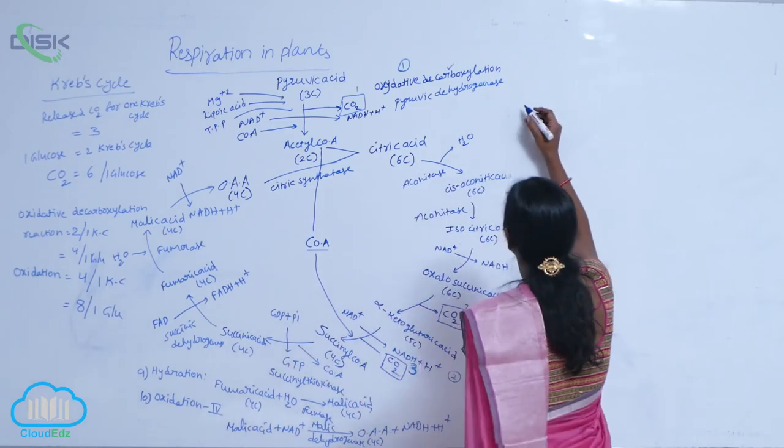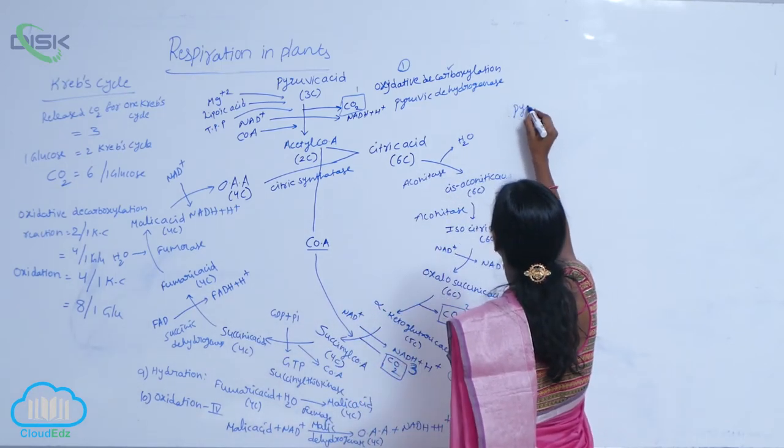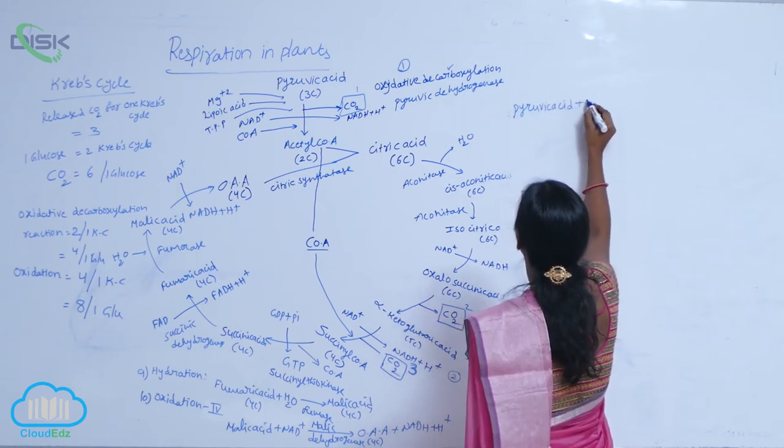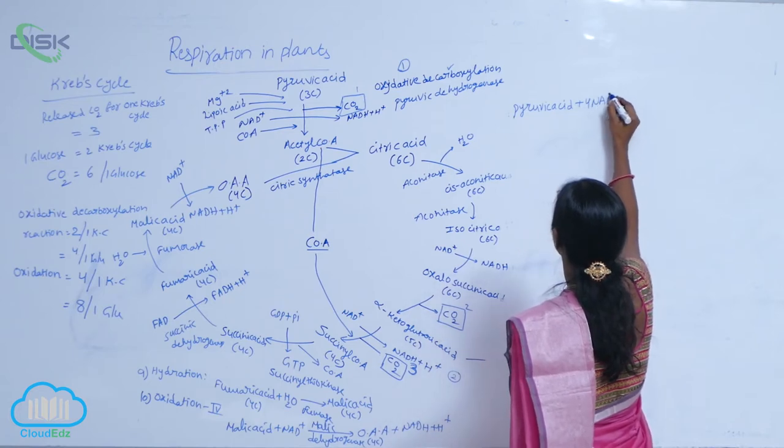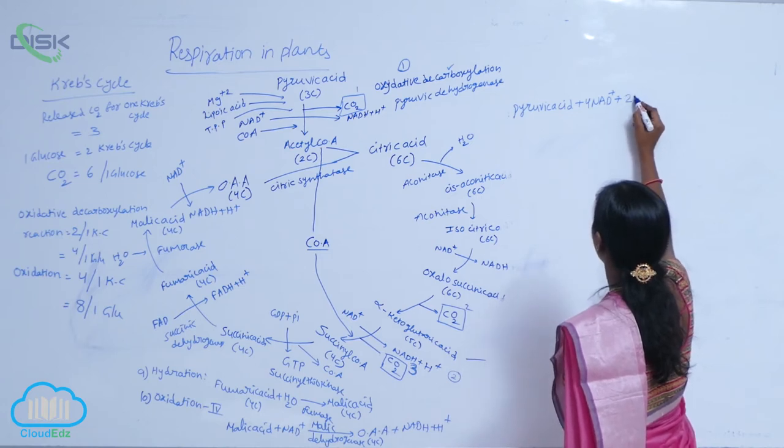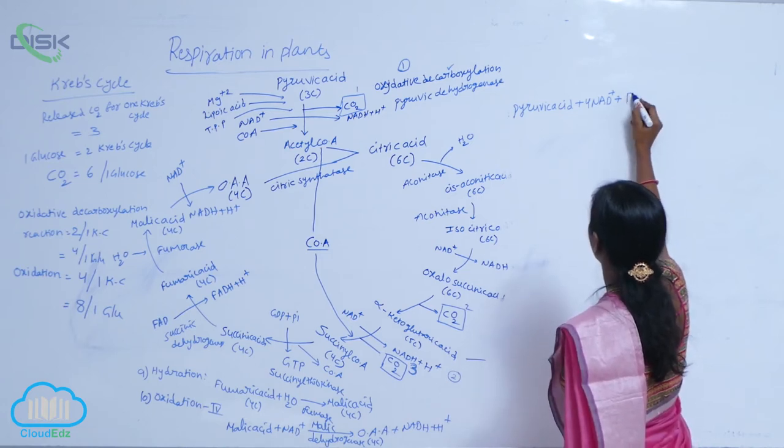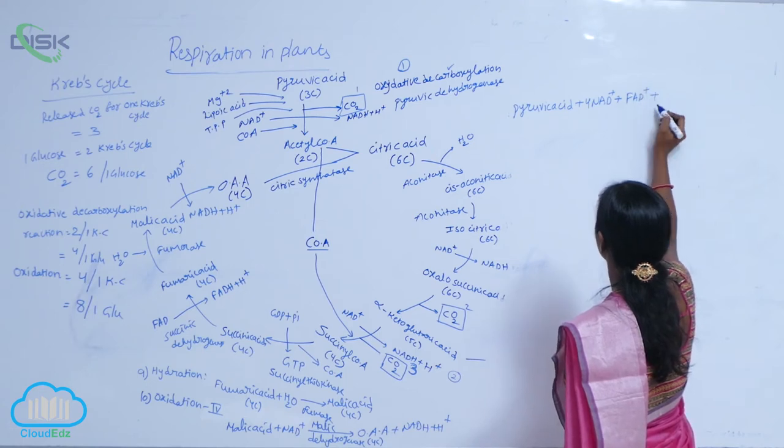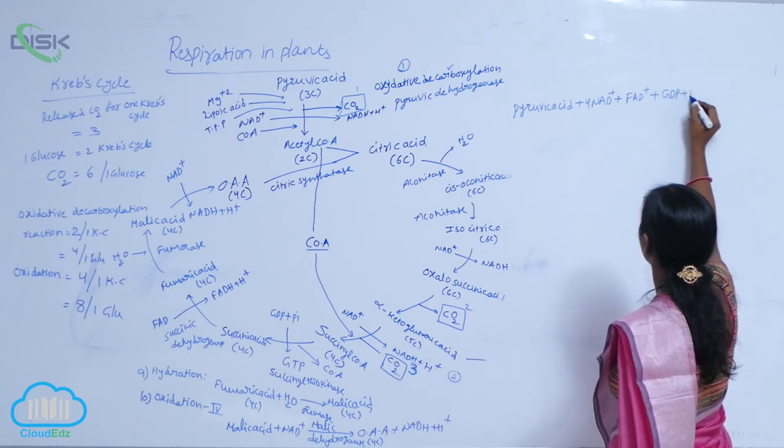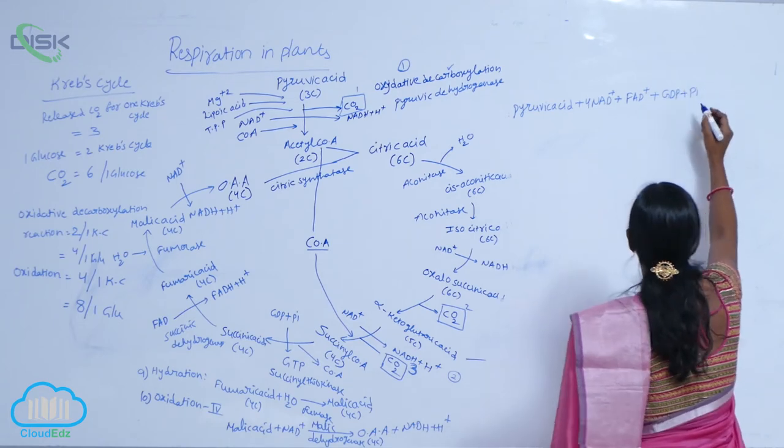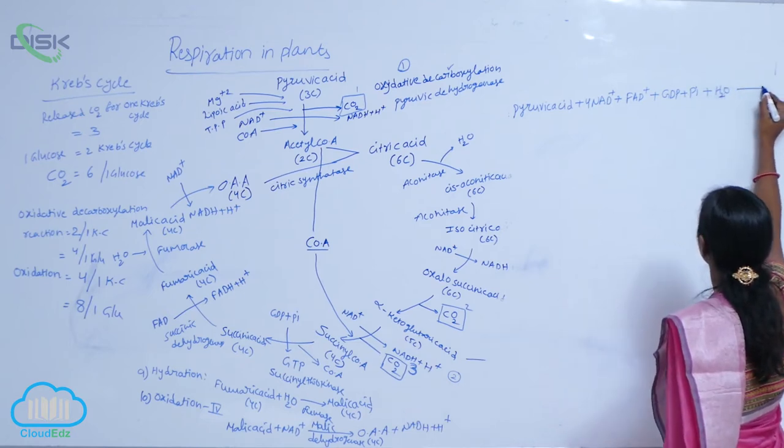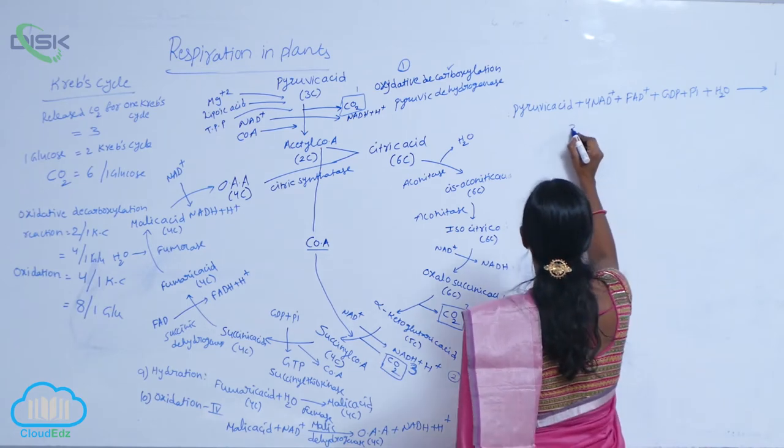Summary of Krebs cycle: Pyruvic acid plus 4 NAD+, 1 FAD+, 1 GDP, 1 inorganic phosphate, and water molecules gives rise to 3